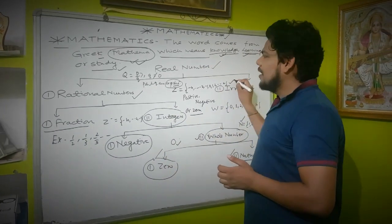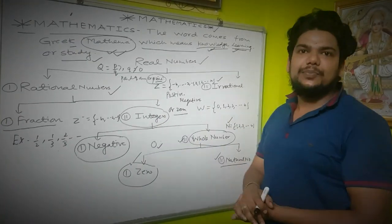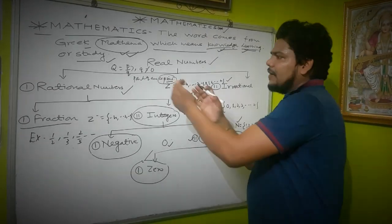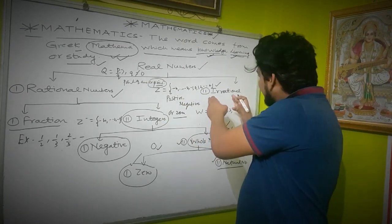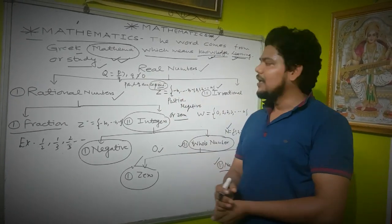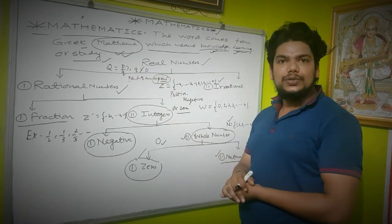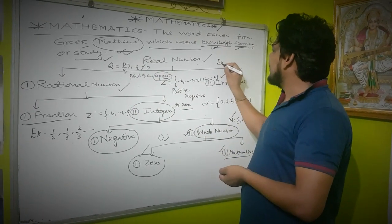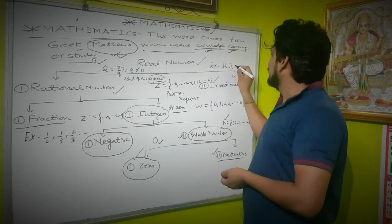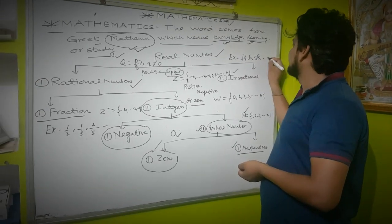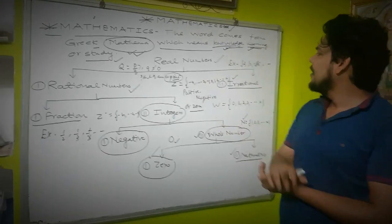The irrational number is the just opposite of the rational number. While a rational number can be written in the form p/q where q ≠ 0, an irrational number cannot be written in that form. Examples include root 2, root 3, root 5, and so on. These are irrational numbers.